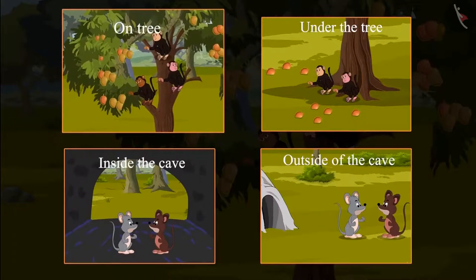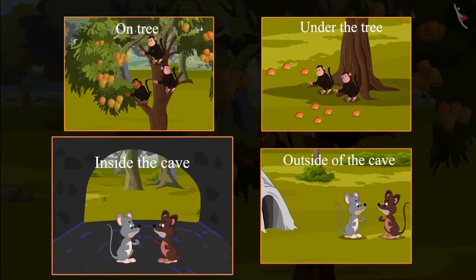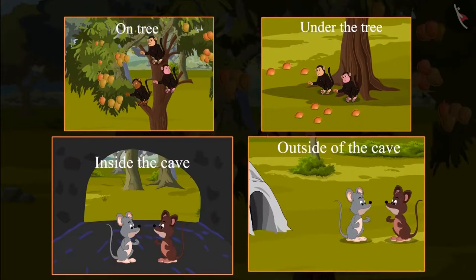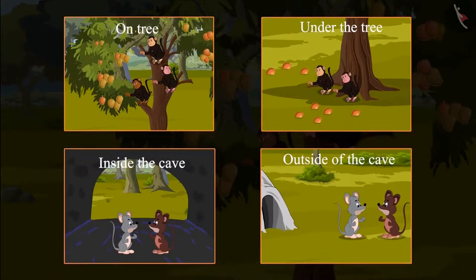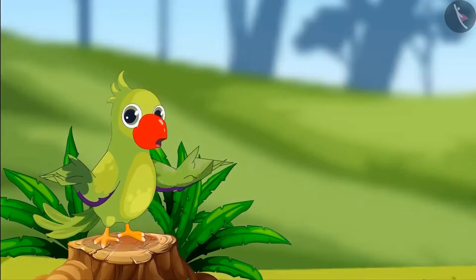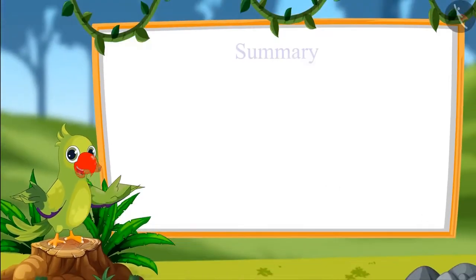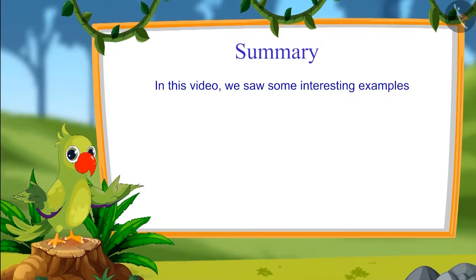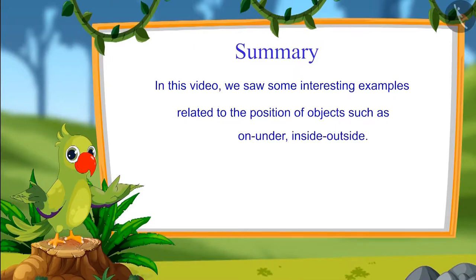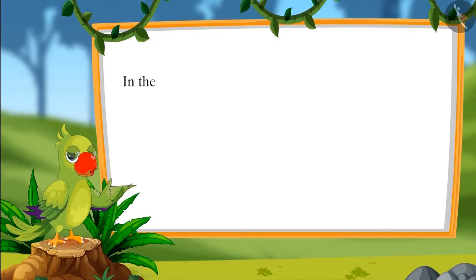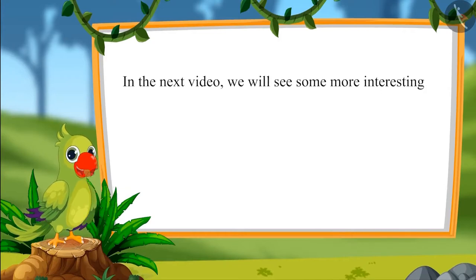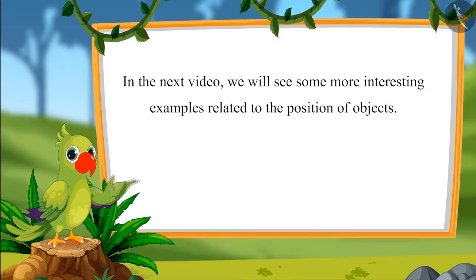So children, we saw that few things were on the tree and few were under the tree; few were inside and few were outside. These are called positions of objects. In this video, we saw some interesting examples related to the position of objects such as on, under, inside, and outside. In the next video, we will see some more interesting examples related to the position of objects.